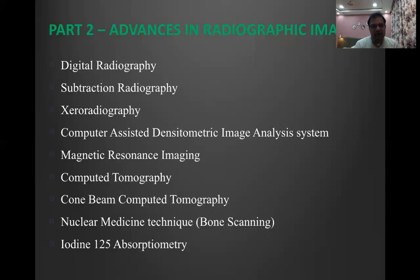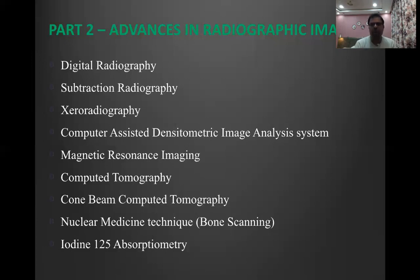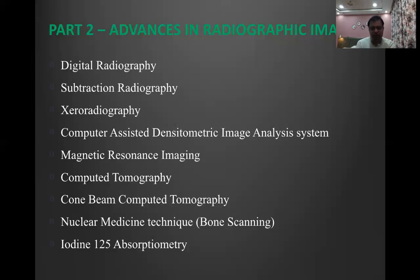Conventional radiography is now obsolete — it's been obsolete for about ten years. We are now all digital. This includes conventional digital radiography, subtraction radiography, computer-assisted densitometric image analysis (though now also obsolete), magnetic resonance imaging (MRI), computer tomography, and most importantly cone beam computed tomography. There is also nuclear medicine technique, also known as bone scan, and iodine-125 absorptiometry.